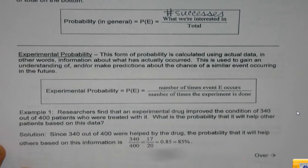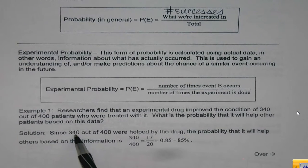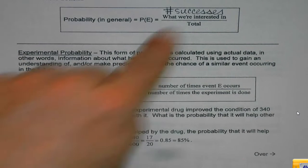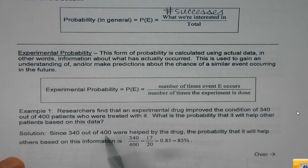The example we see is down here on the bottom. Researchers find this experimental drug improved the condition of 340 out of 400 patients who were treated. What's the probability it will help other patients? Okay, so they actually did an experiment. 340 times they had a success. They got what they wanted. That goes on top of the fraction. How many times did they try it? They tried it 400 times. That goes on the bottom.